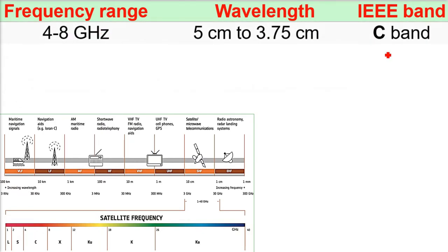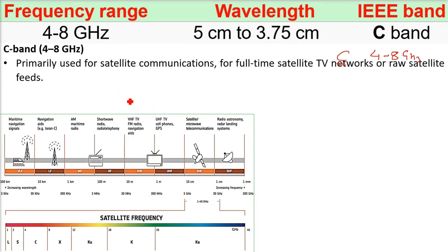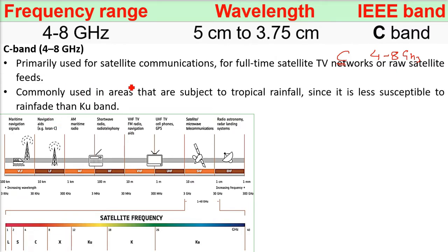Then you have C band. C band, this is 4 to 8 gigahertz. L S C. C is primarily used for satellite communication, for full-time satellite TV networks or raw satellite feeds. Normally used in areas that are subjected to tropical rainfall because this is less susceptible to rain, because in the Ku band most of the frequency is absorbed by the rain. Here you use C band.